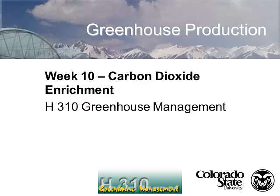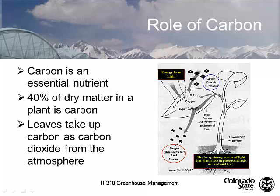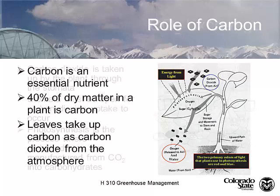We talked about essential elements — carbon, hydrogen, oxygen being non-fertilizer essential elements. Well, in the greenhouse we run out of carbon dioxide, and oftentimes we're required to fertilize or inject additional CO2 into our system. 40% of the dry matter is carbon. Leaves take carbon up as carbon dioxide from the atmosphere; they don't take it up from the soil. It is an essential element and it's part of every plant.